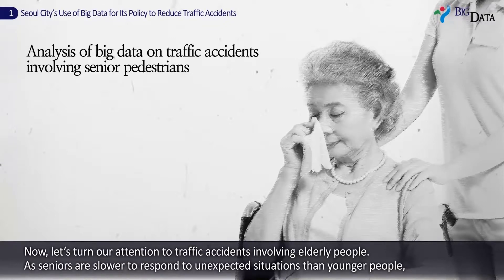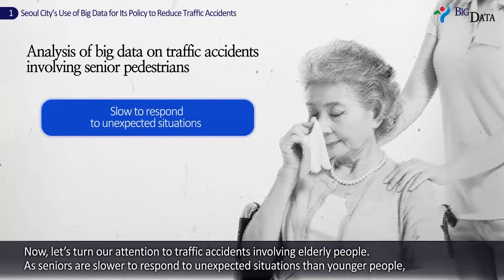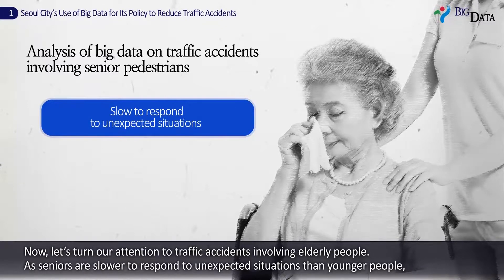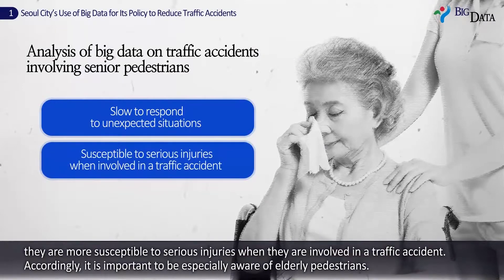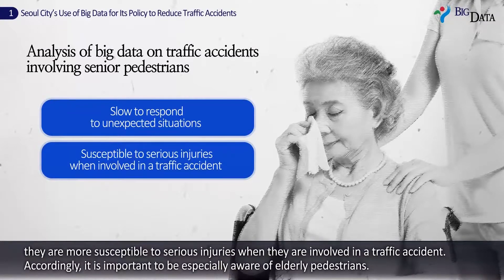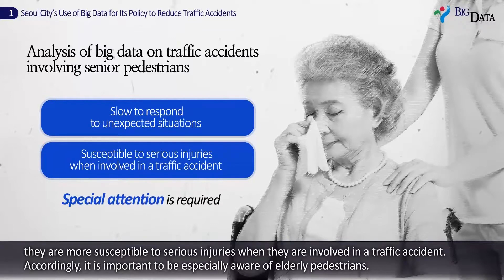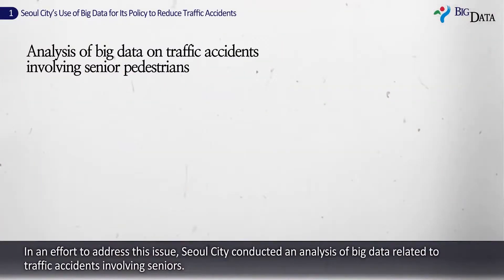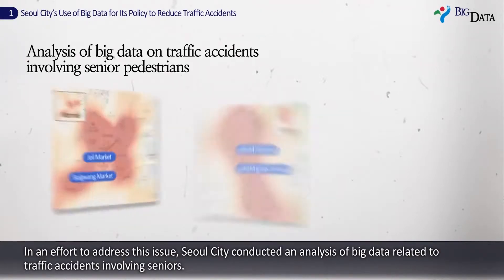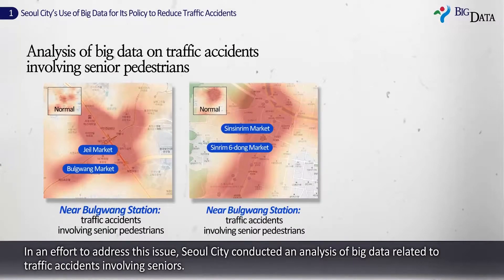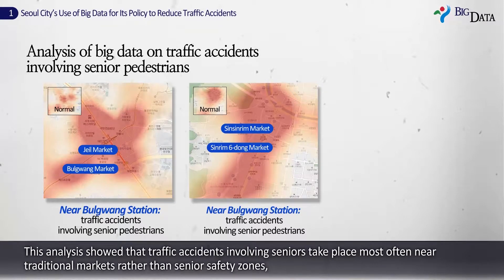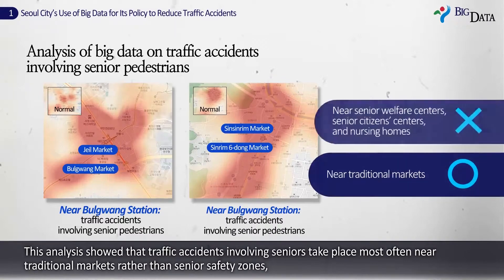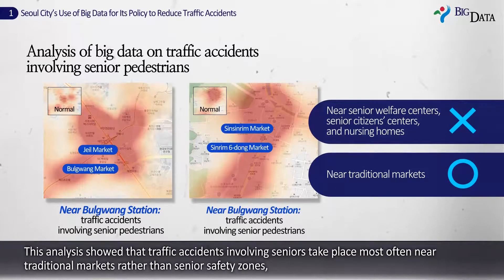Now let's turn our attention to traffic accidents involving elderly people. As seniors are slower to respond to unexpected situations than younger people, they are more susceptible to serious injuries when involved in a traffic accident. Accordingly, it is important to be especially aware of elderly pedestrians. Seoul City conducted an analysis of big data related to traffic accidents involving seniors, which showed that such accidents take place most often near traditional markets rather than senior safety zones such as senior welfare centers, senior citizen centers, and nursing homes.